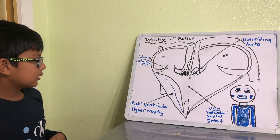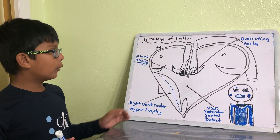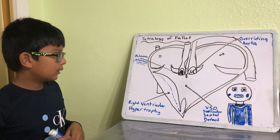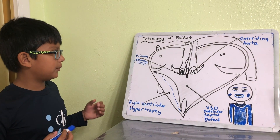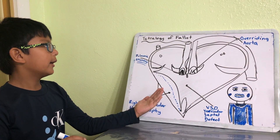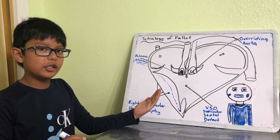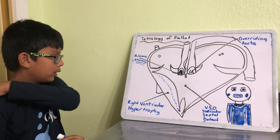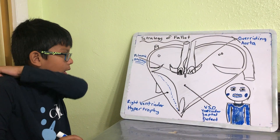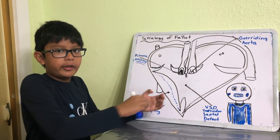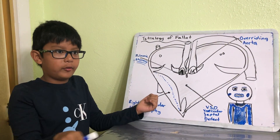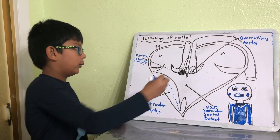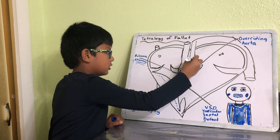Next, we have an overriding aorta. This basically means that the aorta is larger than usual, so resistance goes down and more blood can flow in this direction.